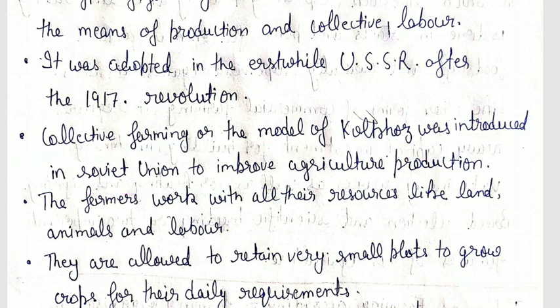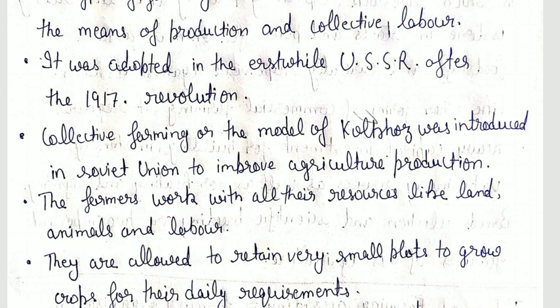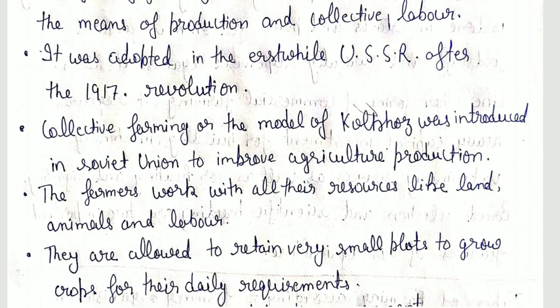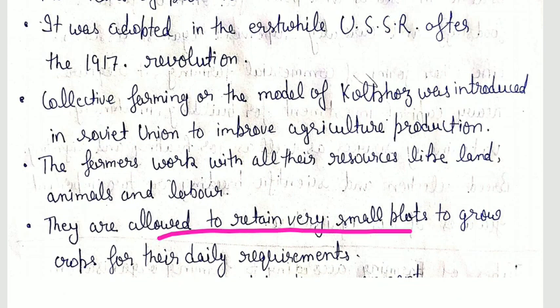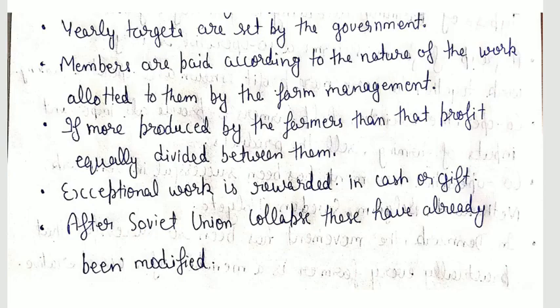Collective farming is similar to cooperative farming but with some differences. Farmers work with all their resources — land, animals, and labor. They are allowed to retain very small plots to grow crops for their daily requirements. Yearly targets are set by the government. Members are paid according to the nature of work allotted to them by the farm management.